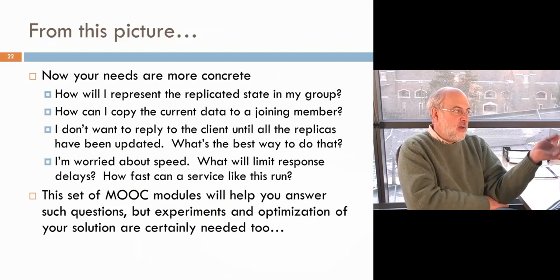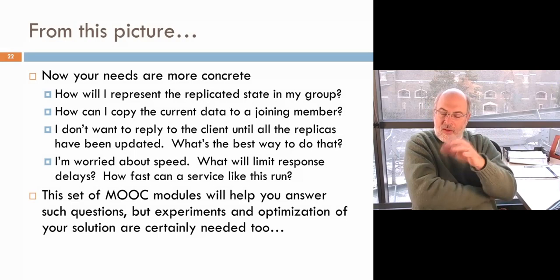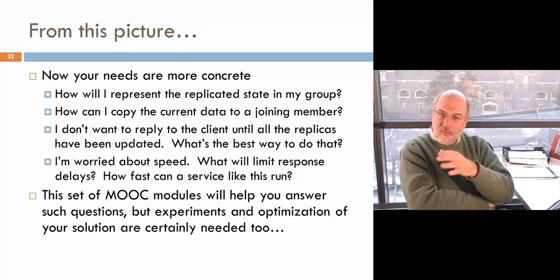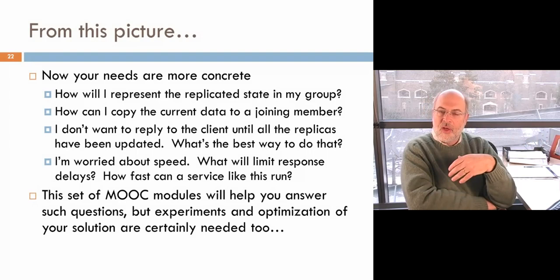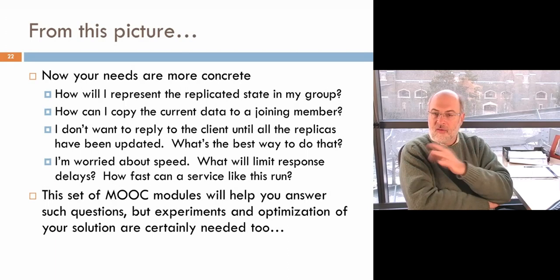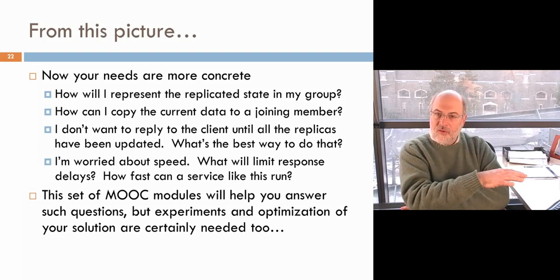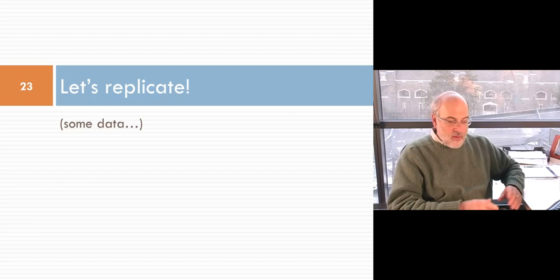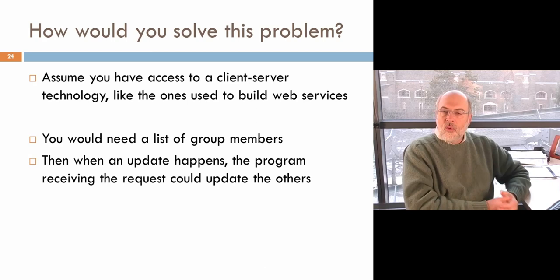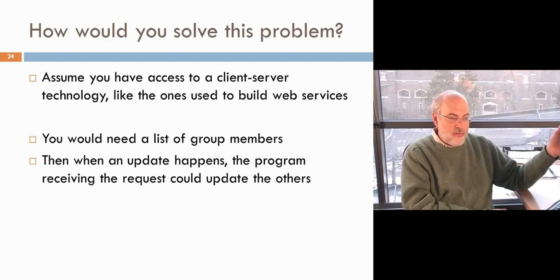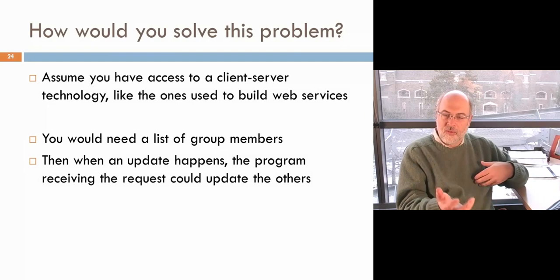From that picture we can start to be much more concrete and ask: how am I going to replicate state, represent it, update it, and create checkpoints? How will I deal with replying to my external client — maybe I don't want to reply until the group has definitely received and will keep the request, or maybe I'm in a hurry and sacrifice other properties. These design choices come up, and in these MOOC modules we're going to go through those choices and look at exactly how ICIS makes them.